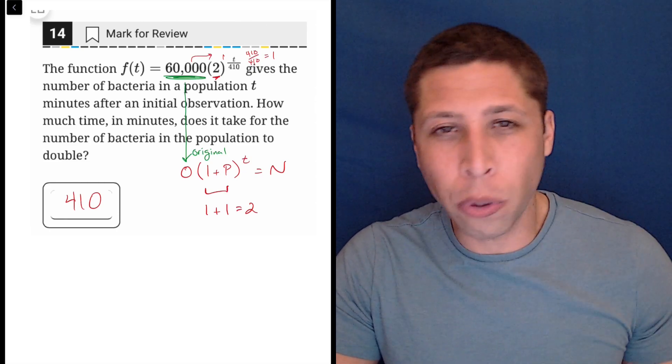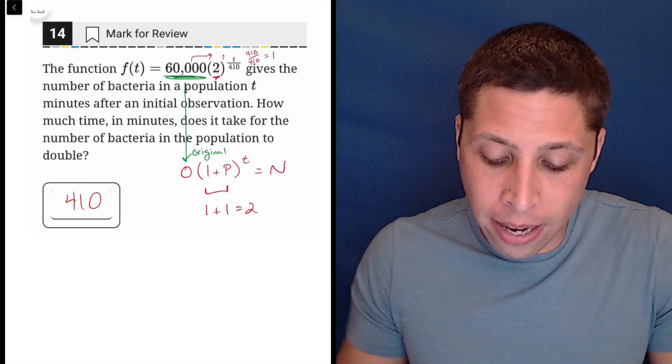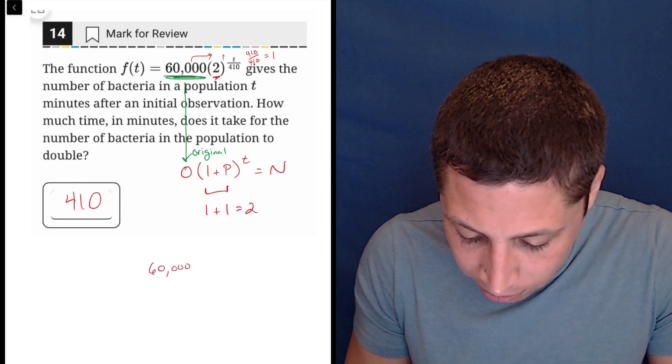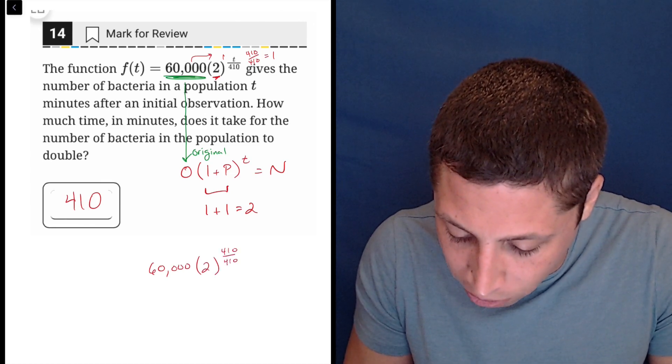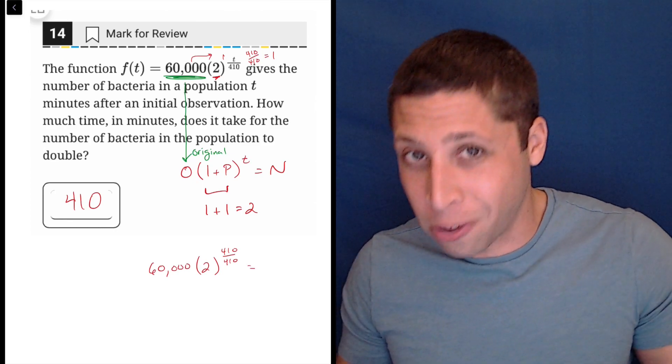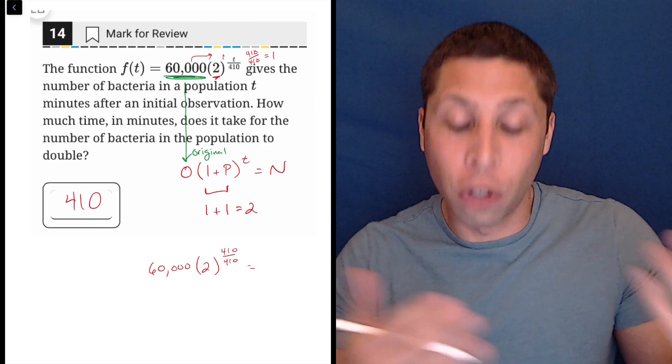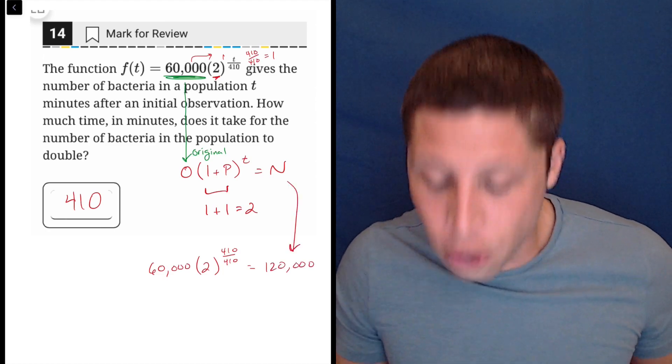So if you thought it was 410 but weren't 100% sure, it's very easy for you to check. Just plug that number in and actually do the work. So 60,000 times 2 times 410 over 410. You could just do that in your calculator. 410 over 410 is 1, 2 to the first is 2, 2 times 60,000 is 120,000. That's our new value.